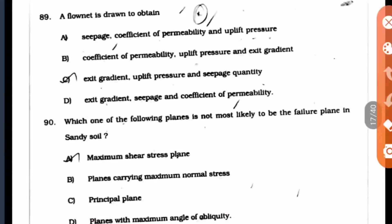Question 89: A flow net is drawn to obtain what? We have studied three properties or three uses of flow net which can be derived. Option C: exit gradient, uplift pressure, and seepage quantity. All these three you can find out from the flow nets.